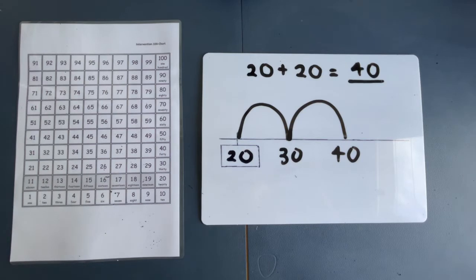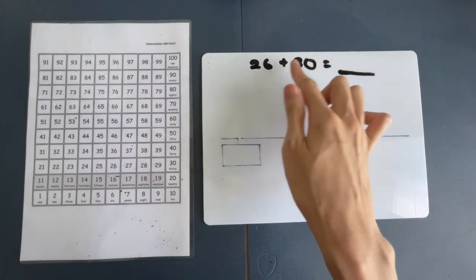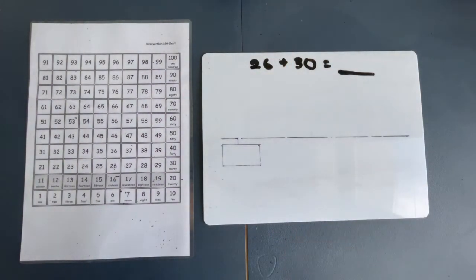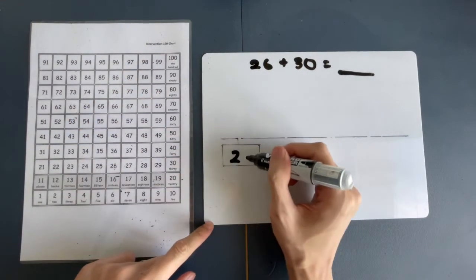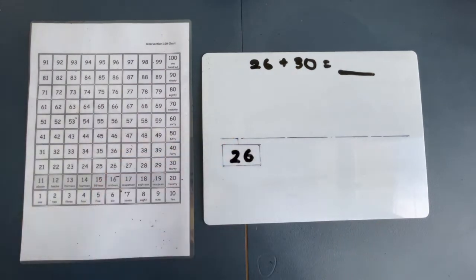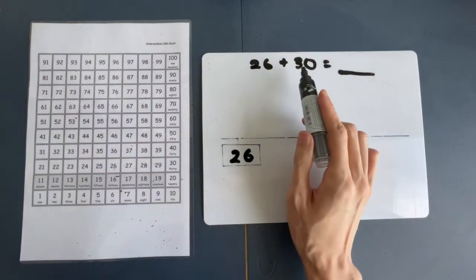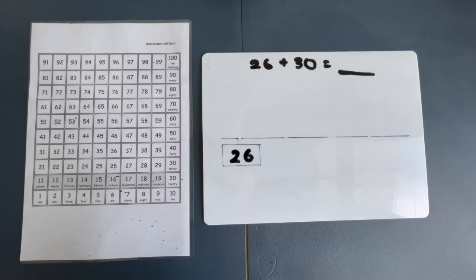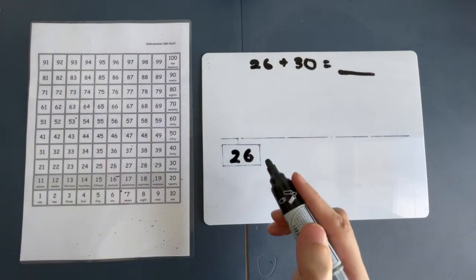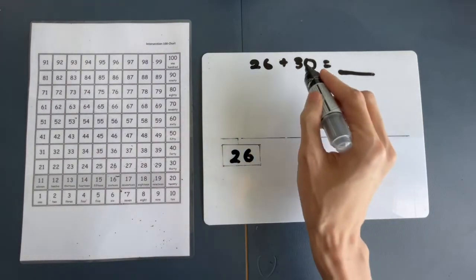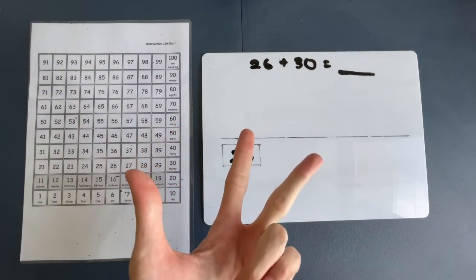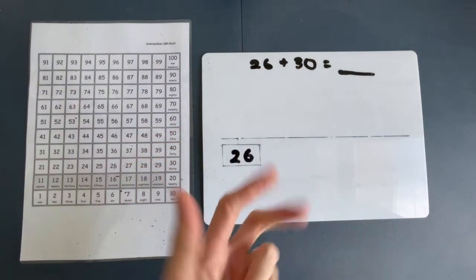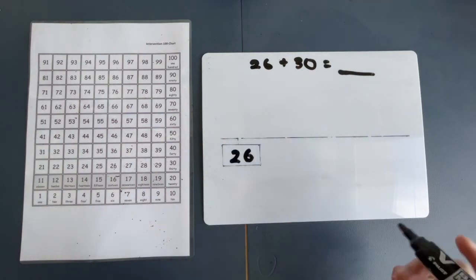Don't worry. Let's do another example. Now, we have 26 plus 30. How do we do this? Same thing. 26. We'll copy it into the box. And remember our start line. Are we going to jump 30 times? Of course not. We are going to jump in 10s. And how many 10s is 30? 10, 20, 30. 1, 2, 3. 3 tens to make 30, which means we are going to jump 3 times.